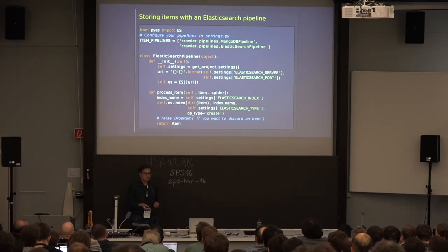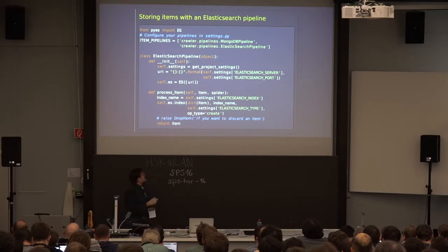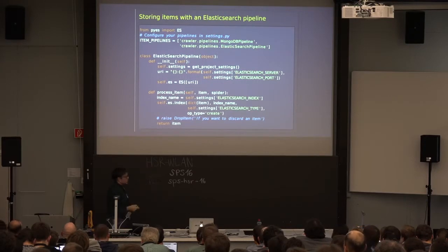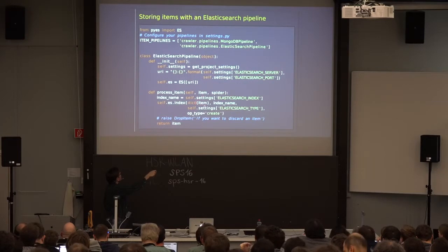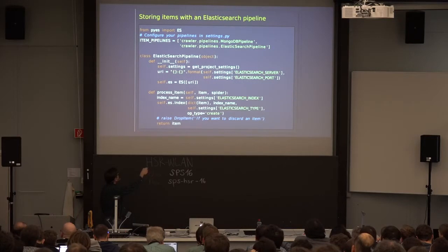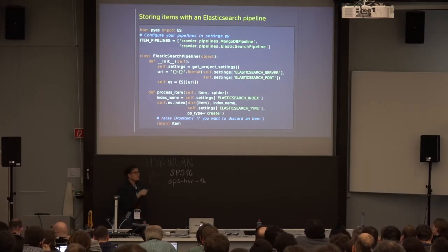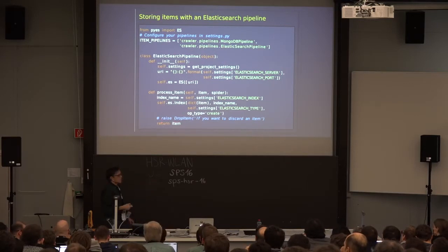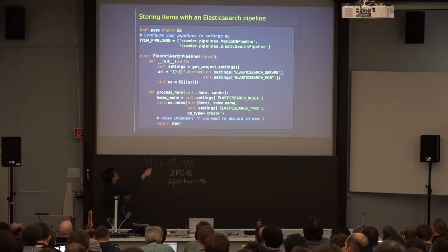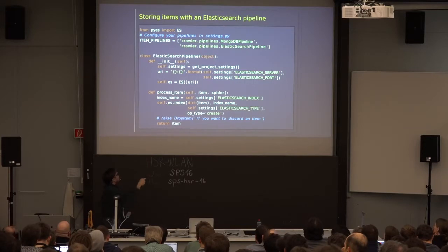Now I want to store the scraped data in Elasticsearch. I use the Elasticsearch Python module for this. I define a pipeline class with a process_item function — I get the item and the spider that yielded it, and basically store it into the Elasticsearch index using the index function. If you don't want an item in your database, you can raise a DropItem exception in the pipeline. You also need to define your pipelines in the settings.py file of your Scrapy project.